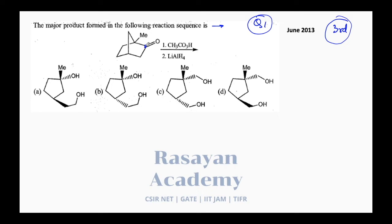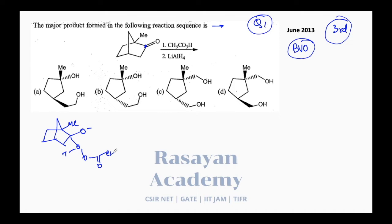What does peracetic acid do to the ketone? This is your Baeyer-Villiger oxidation. What you have to do is just oxygen insertion into the carbonyl. The carbonyl is attacked by the peracetic acid; the oxygen has a positive charge, the O-minus falls back, and the more substituted carbon should migrate and give the insertion.